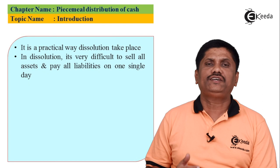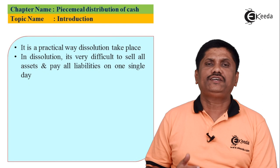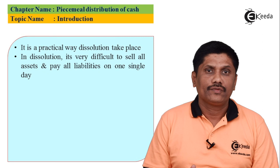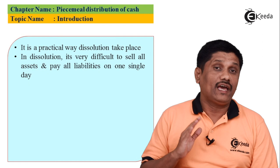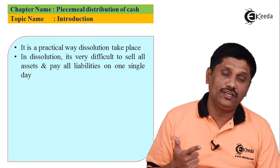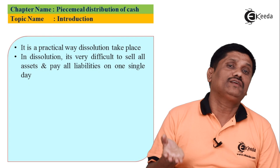After paying outside creditors, we pay partners' loan. After paying all outsiders — preferential creditors, secured creditors, unsecured creditors — the next inside liability is partners' loan. So the order is: first set aside realization expenses, then settle preferential creditors, analyze secured creditors, pay unsecured creditors, and finally pay partners' loan.